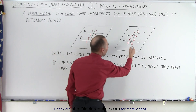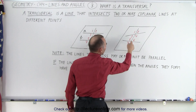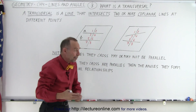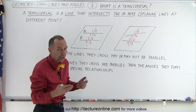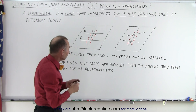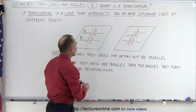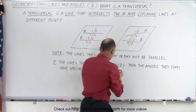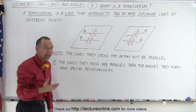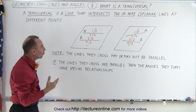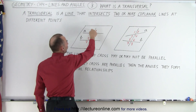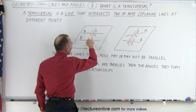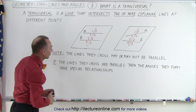Here we have another example. Here's the transversal — it intersects two lines that are on the same plane. In this case, they happen not to be parallel to one another; they don't have to be. Notice, in the case that there are two lines — let's call this line A and line B — eight angles are formed: four angles when the transversal crosses the first line, and four more angles when it crosses the second line.